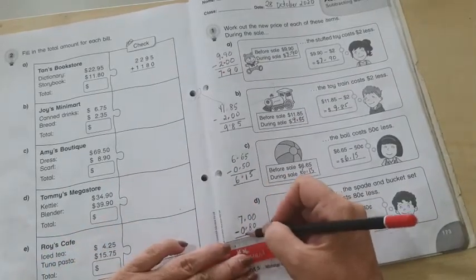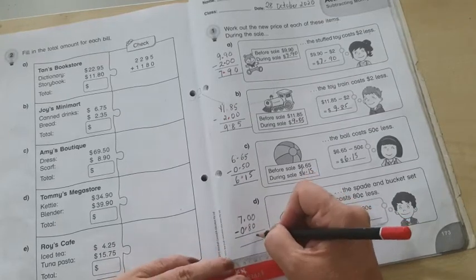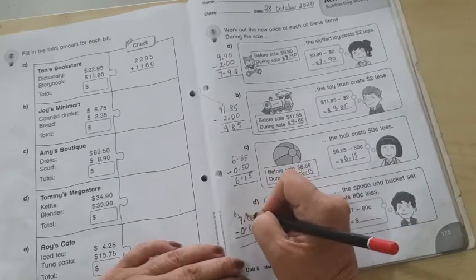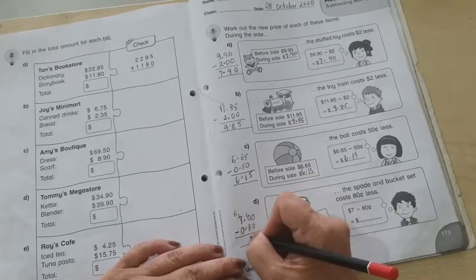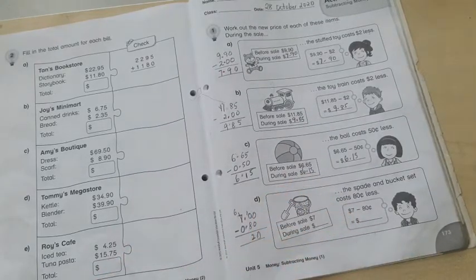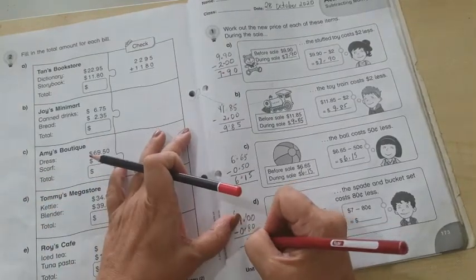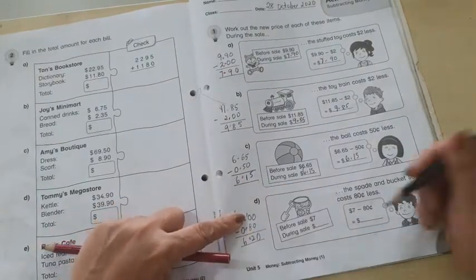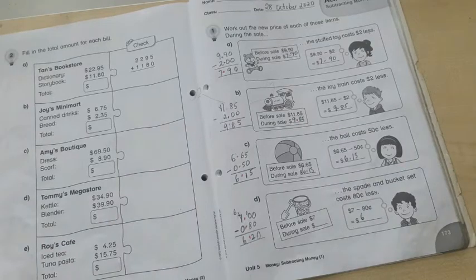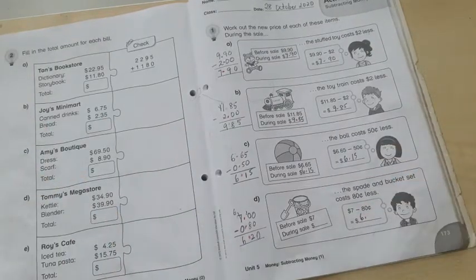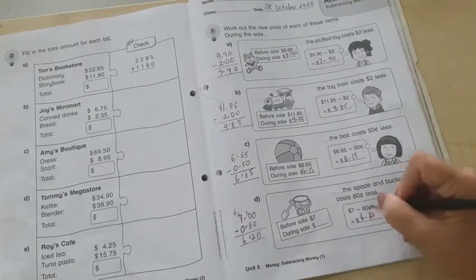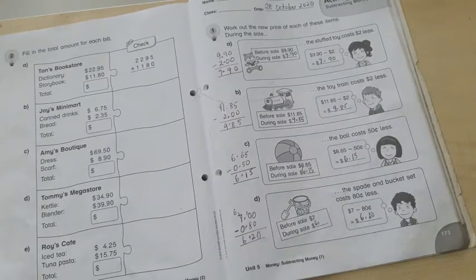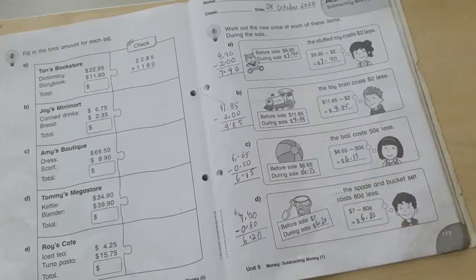All right. And, you minus 0. You cannot take away 8 from 0. So, you need to borrow. This becomes 6. This becomes 10. 10 minus 8 is 2. Put the decimal point. And, 6. Okay. So, the answer is $6.20. $6.20. Okay. Bye.